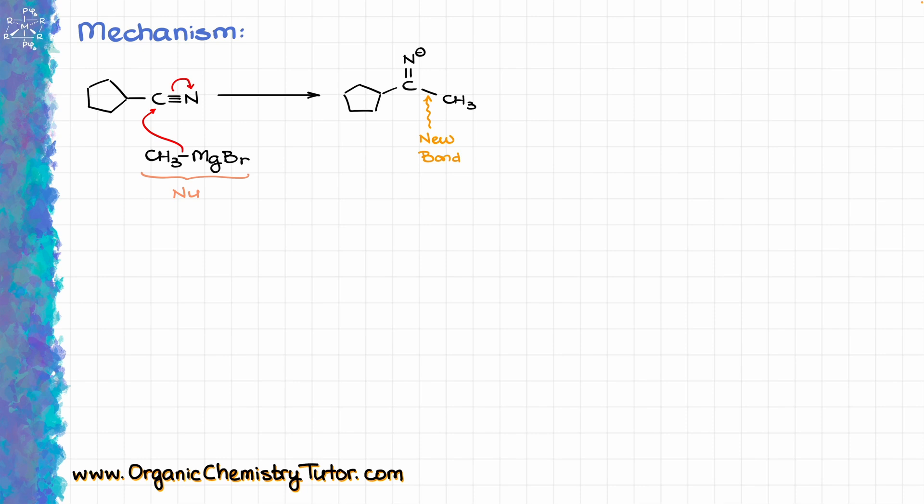And while Grignard reagents can be very good nucleophiles, they are not strong enough to tackle anything that is already negatively charged, which means that as soon as we form our negatively charged intermediate, our Grignard reagent will not be able to attack it again, which means that we can go right away into our workup. And as with any Grignard reagent, the workup is just going to be some sort of aqueous acid, which in this case is going to take our negatively charged nitrogen and protonate that, bringing it to a neutral state.